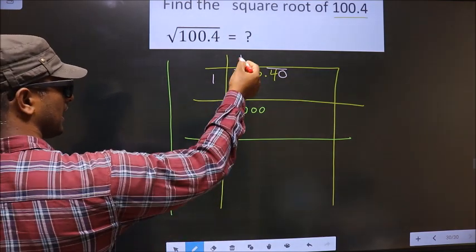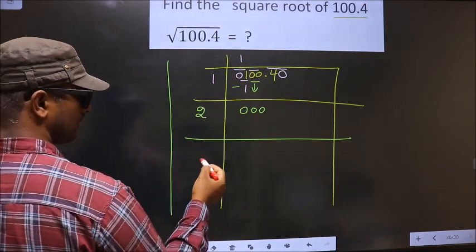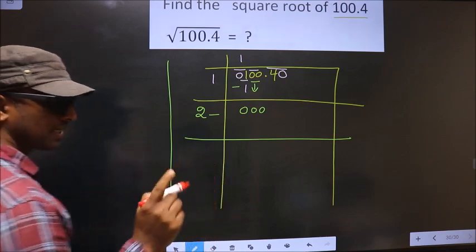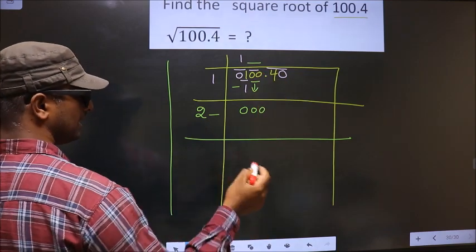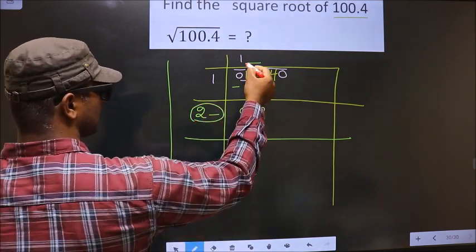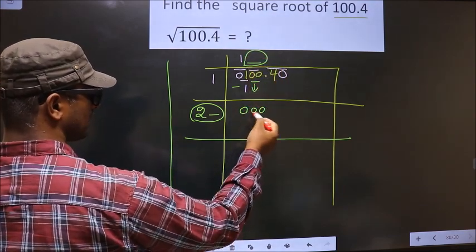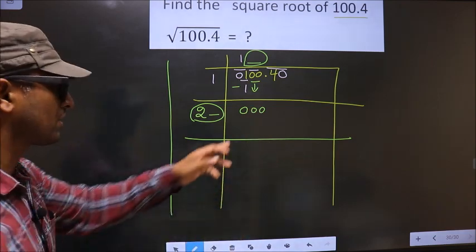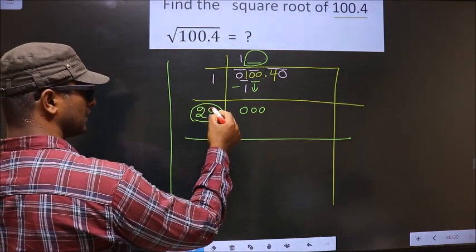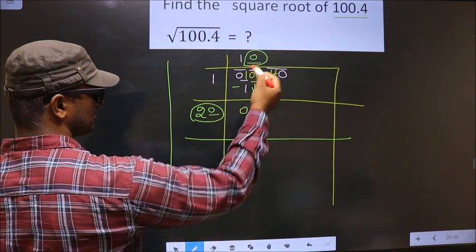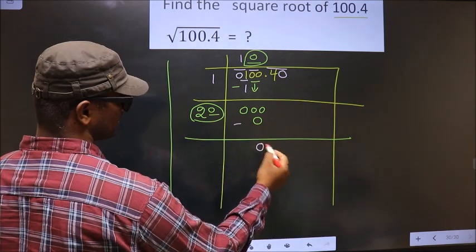Now here we should add these two numbers and write here. So 1 plus 1, 2. Now we should write a number here. Condition is whatever number I write here, here also I should write the same number. And also when you multiply this number and this number, the result should be either equal to this or smaller than this but not larger than this. So here we have all 0s. So here we have to take 0 itself. No other number possible. So 20 times 0, 0. So now you subtract, you get 0 itself.